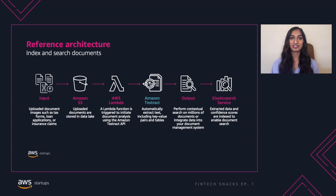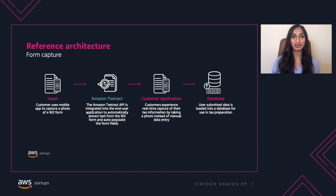Let's take a look at this reference architecture showing how to create a document index and search pipeline. Images are uploaded into S3, leveraged here as a data lake for reliable and durable storage. A Lambda function is triggered upon upload or scheduled to initiate document analysis with an API call to Amazon Textract. Textract then extracts the text from the document and creates searchable output. Using Amazon Elasticsearch Service, you can index the extracted text and confidence scores of each document.